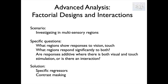We're interested in looking at areas which might respond to either of these two things independently — vision and touch — but also how do they combine together? What happens in areas which are responding to both? Are they responding more strongly or less strongly than we'd expect when we've combined them together? Specifically, we're going to look at how to formulate that with regressors and a thing called contrast masking.